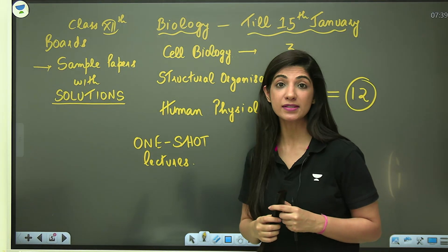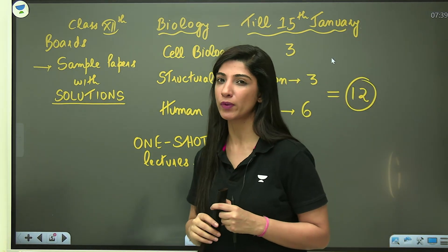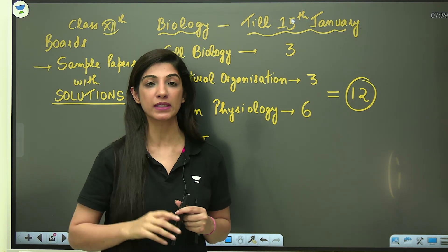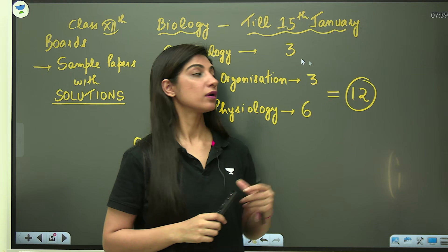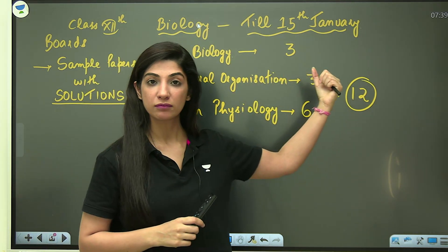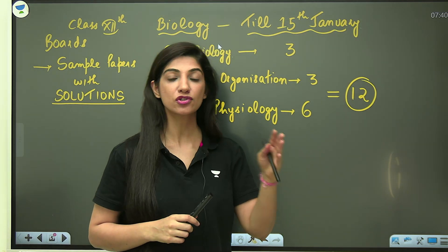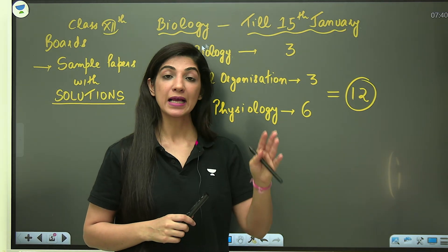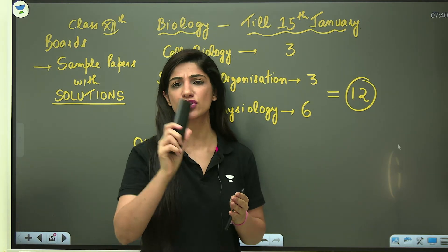Now coming to the strategy. So these 30 days, how many chapters do you have? If you plan to do only these three units for the next 30 days, you have three chapters from cell biology: cell division, cell structure, biomolecules. Structural organization same, three chapters. And human physiology with all the deletions is five chapters, six chapters.